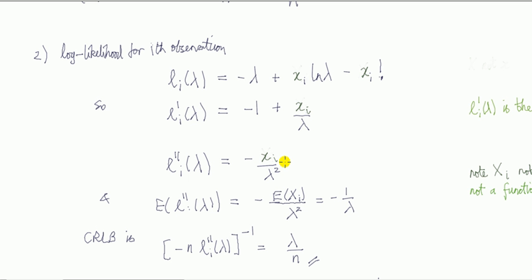Now let's compute the Cramér-Rao lower bound. Let's break that into stages. Take the log likelihood for just the i-th observation—X_i is Poisson in this question. Take the first derivative, and take the second derivative.